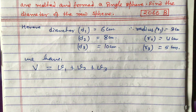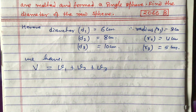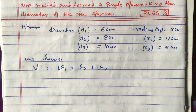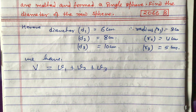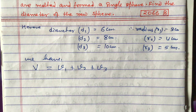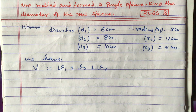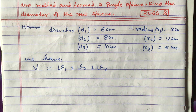Whenever you change one object into another object by melting it, its volume will be equal. Sometimes you may change a cylinder into a sphere, or a cylinder into a cone, or a sphere into a cone. In all such conditions, the volume will always be equal.